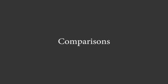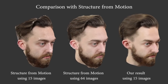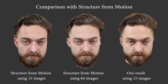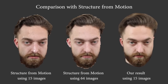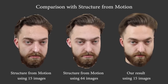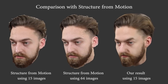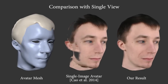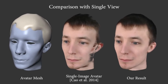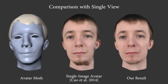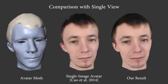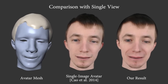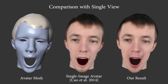Now we show some comparisons. We compare our results with those from structural motion techniques using different numbers of images. As can be seen, our result is smoother and more visually pleasing. We also compare against a single image-based avatar modeling technique. Our method can handle large rotations as well as fine-scale details like folds and wrinkles, which are missing in the single image-based technique.